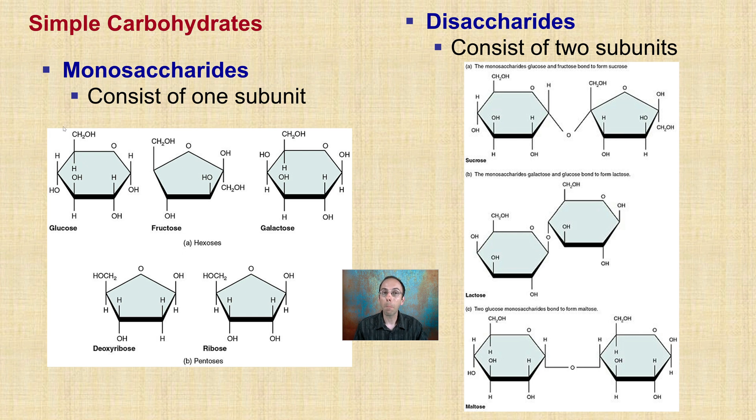A little bit bigger here would be disaccharides. Di meaning two, saccharides meaning sugar, and they consist of two subunits. So for example, sucrose are two monomers that are linked together. It's like a lactose and a glucose linked together. We see here lactose is actually two glucose molecules linked together forming this disaccharide. Both of these fall into the category of simple carbohydrates.